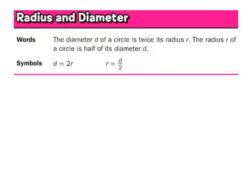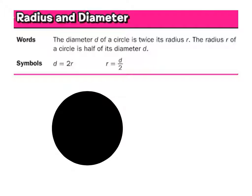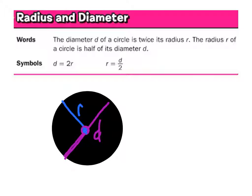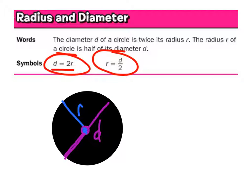Once again, in this example, the radius is simply any line that connects the center with some outer edge of the circle. The diameter simply goes all the way through from one side to the other side, but it has to go through that center point. Since these are the cases, this is how we get our two equations or formulas for finding diameter and radius: if given the radius, multiply by two to get diameter; if given the diameter, divide by two to get radius.